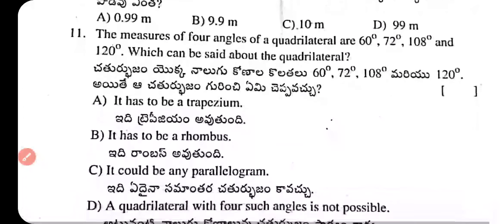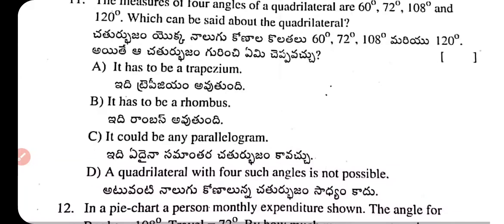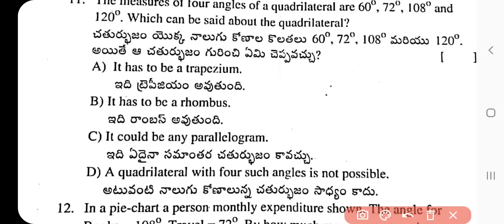Question 11: The measures of the four angles of a quadrilateral are 60°, 72°, 108°, and 120°. What can be said about the quadrilateral? The answer is A — it has to be a trapezium.